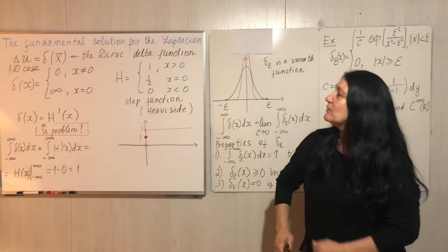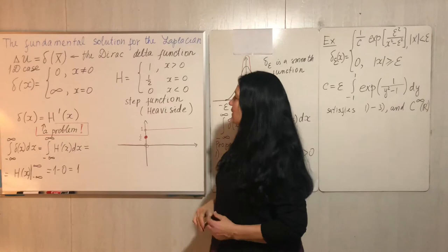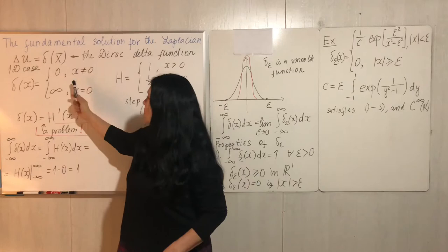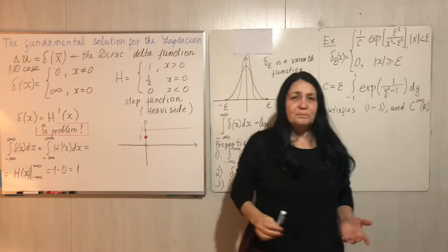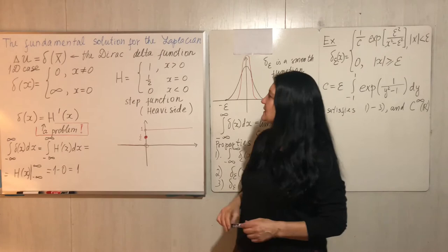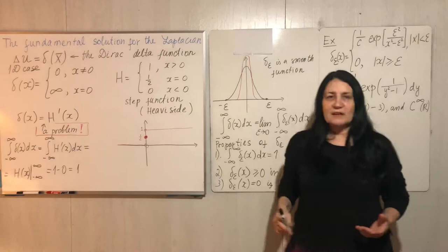First let's consider the delta function in the one-dimensional case. Dirac defined this function as 0 everywhere except for the point 0, the origin, and infinity at the origin. He was studying quantum mechanics — he was a physicist.